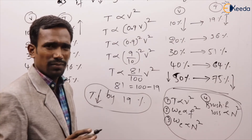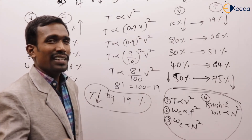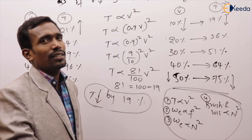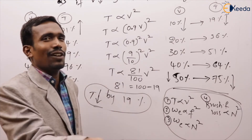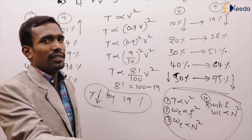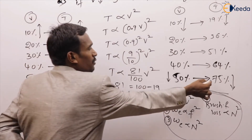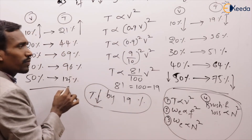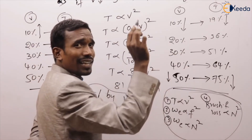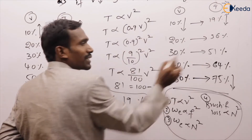Just remember the square law: 9 squared, 11 squared; 8 squared, 12 squared; 7 squared, 13 squared; 6 squared, 14 squared; 5 squared, 15 squared. For example, 6 squared = 36, which is 100 minus 64. And 14 squared = 196, which is 100 plus 96.